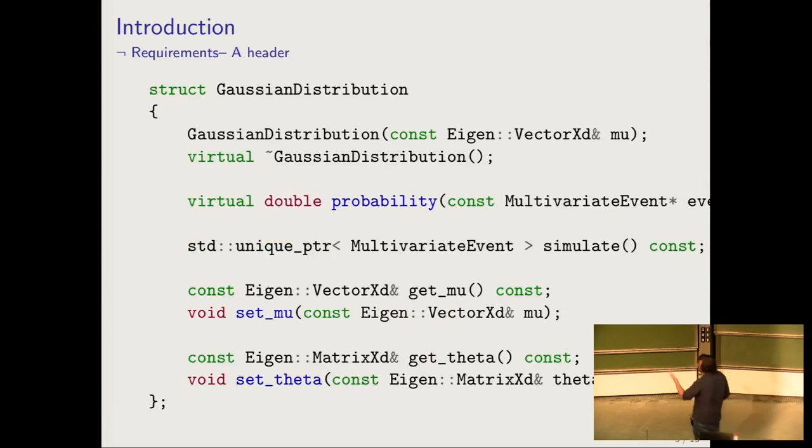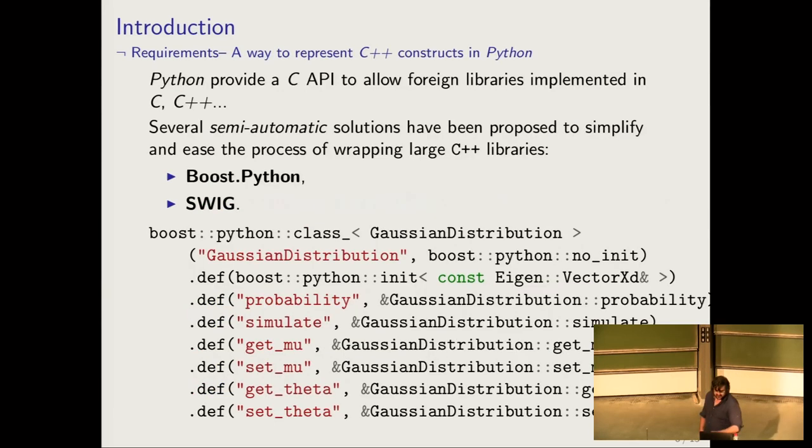What she must do is write a header that's not really surprising for C++, but she needs to have a way to represent the C++ constructs in Python. Python provides a C API to allow this, but it's kind of complicated and I can't ask her for that.